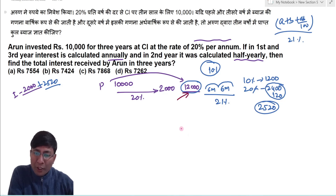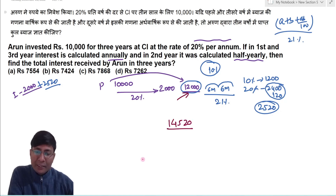So the third year principal is 14,520 rupees.